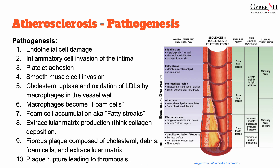The pathogenesis of atherosclerosis occurs in the following steps. First, a stressor such as hypertension will cause endothelial cell damage, which subsequently leads to inflammatory cell invasion of the intima, as well as platelet adhesion. Platelets will subsequently release pro-inflammatory substances as well as platelet-derived growth factor, all of which result in smooth muscle cell invasion. These smooth muscle cells, as well as macrophages that are present, will take up cholesterol and oxidize low-density lipoproteins. These lipid-laden macrophages become known as foam cells, and the accumulation of foam cells results in fatty streaks.